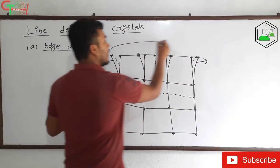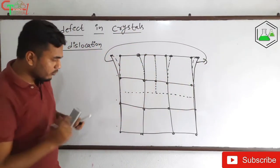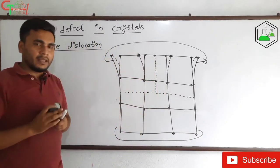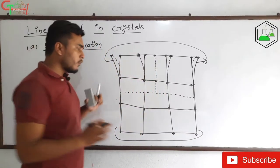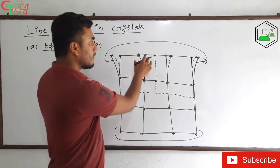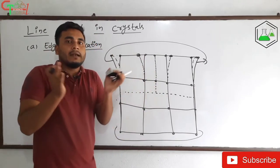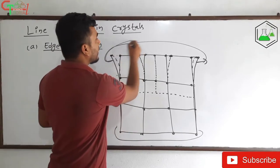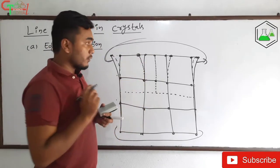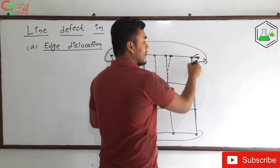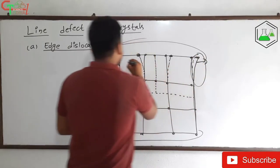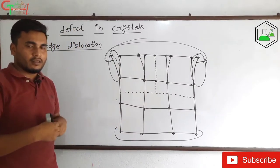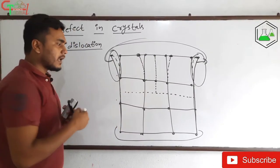Looking at the new structure, the lower edge has a constant breadth but the upper breadth is expanding — it is increasing. So this is no longer a perfect crystal. This defect is along the edges of the crystal, which is why these defects are called edge dislocation.